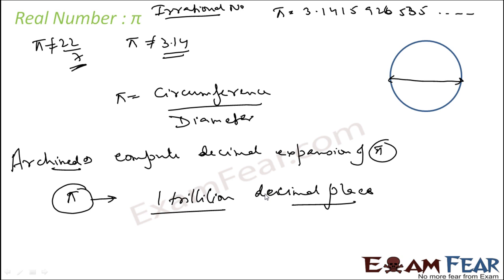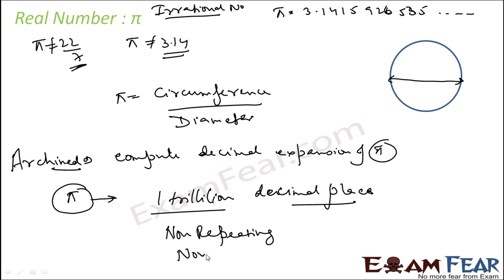It is found that even with 1 trillion digits, it is still a non-repeating, non-terminating number, and that is why it is an irrational number. It is non-repeating and non-terminating.